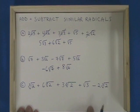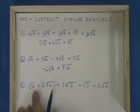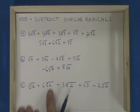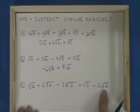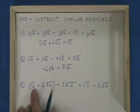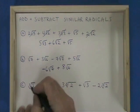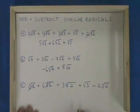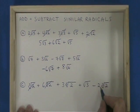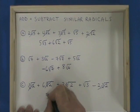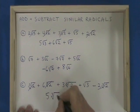In example C, there are cube roots. The cube root of 2 is similar to 6 cube root of 2 and negative 2 cube root of 2. These three terms can be combined: cube root of 2 plus 6 cube root of 2 is 7 cube root of 2, minus 2 cube root of 2 equals 5 cube root of 2.